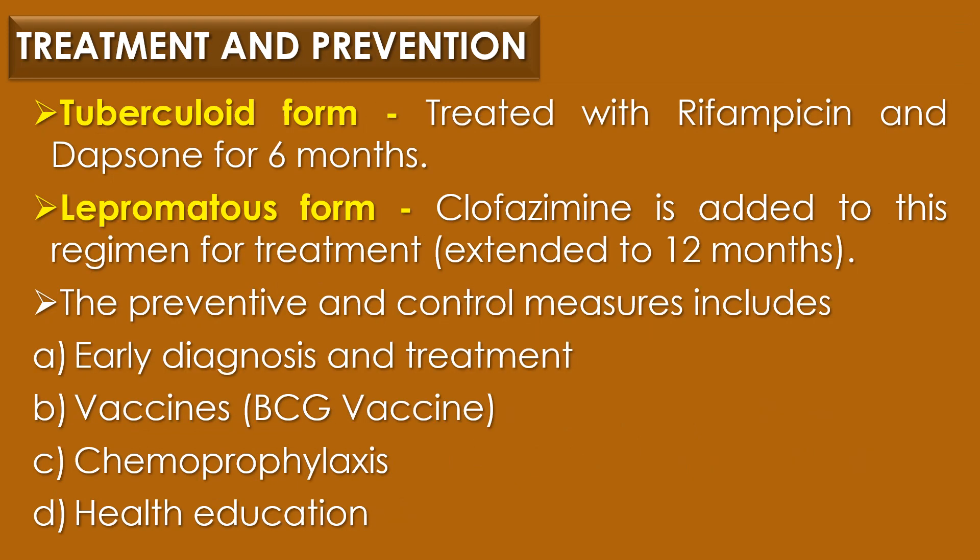Treatment and prevention: The tuberculoid form is treated with rifampicin and dapsone for 6 months. Clofazimine is added to this regimen for the treatment of lepromatous form and therapy is extended to a minimum of 12 months. Preventive and control measures include early diagnosis and treatment, vaccination with BCG vaccine, chemoprophylaxis and health education.